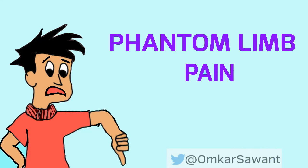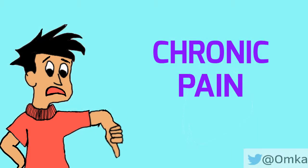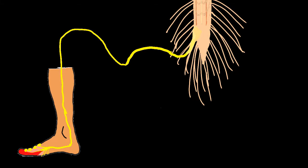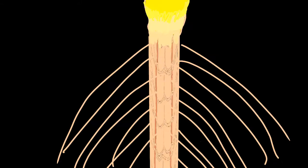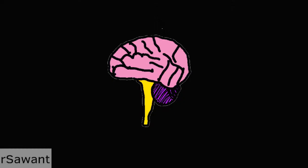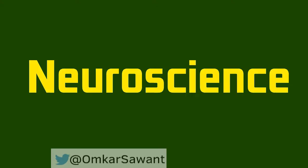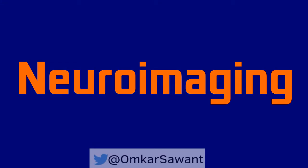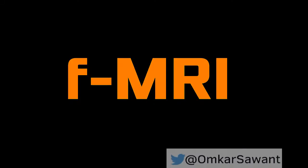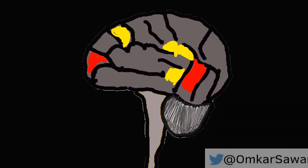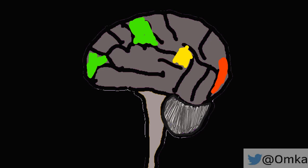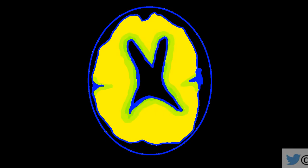Data regarding phantom limb pain and chronic pain made researchers go from the spinal cord to the brain to investigate pain in detail. With the advancement of neuroscience, neuroimaging, and functional MRI technology, it was possible to investigate the effect and the changing brain response to pain.